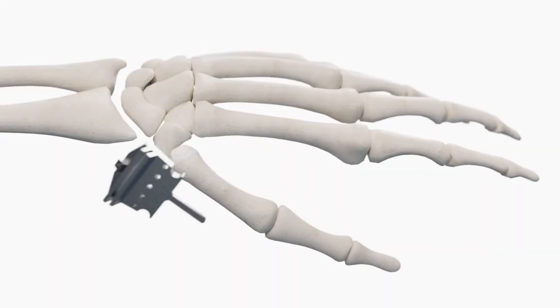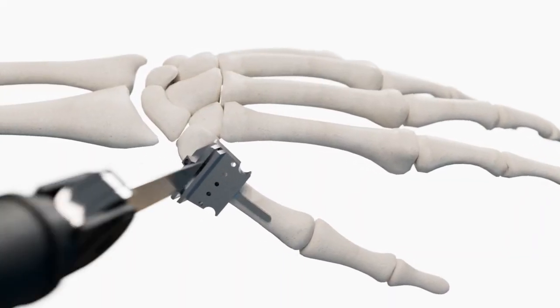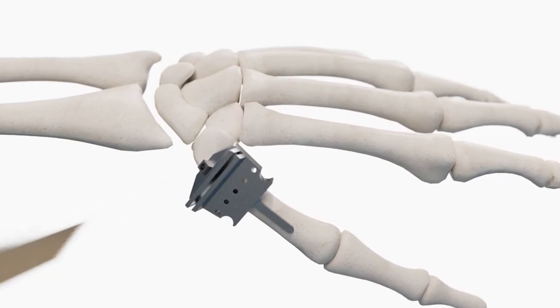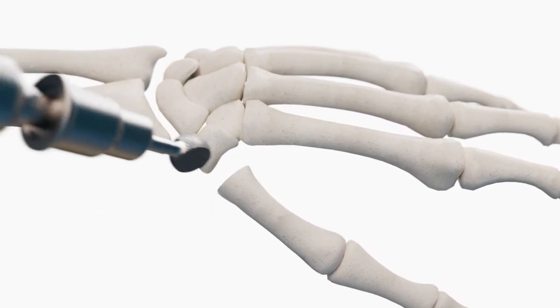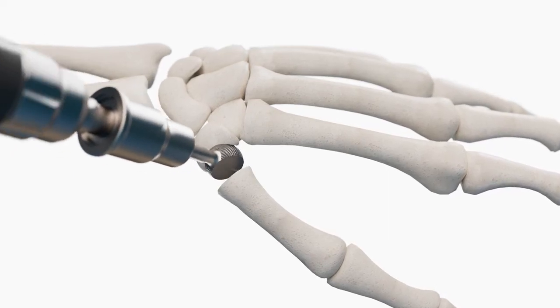Utilizing precision instruments, the arthritic metacarpal base is resected. Next, small burrs are used to create a socket in the trapezium bone for the implant head.